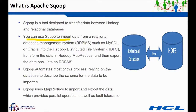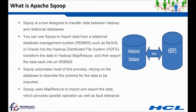You can use Sqoop to import data from RDBMS systems such as MySQL or Oracle into Hadoop systems like HDFS and Hive, transform the data using Hadoop MapReduce, and then export it back to the RDBMS. Sqoop automates most of this process, relying on the database to describe the schema for the data to be imported. Internally, Sqoop uses MapReduce to import and export data, which provides parallel operation as well as fault tolerance.